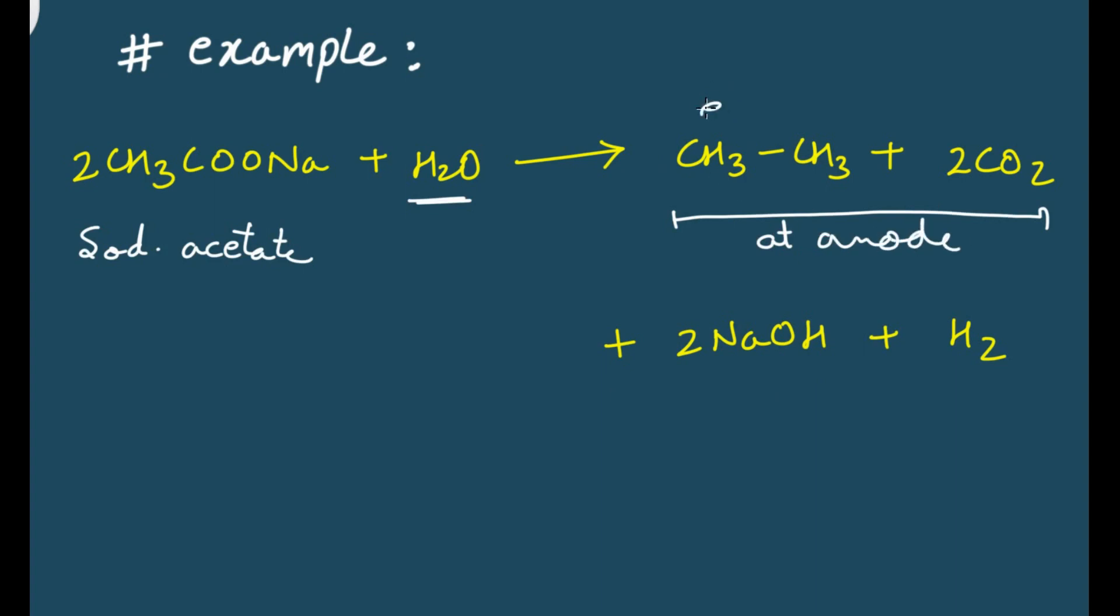We get alkane and carbon dioxide at anode. This is ethane, and this is also symmetrical. So in this process you will receive symmetrical product. Why? Because the same group is combining with itself. Remember this. And the sodium hydroxide and hydrogen gas will be at cathode.